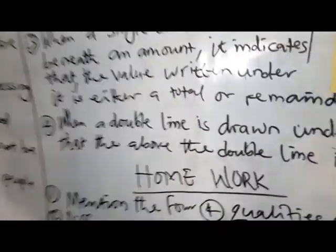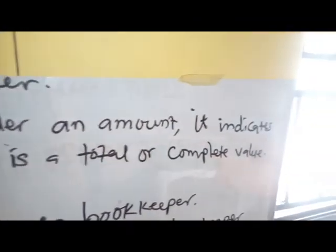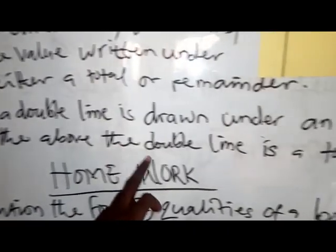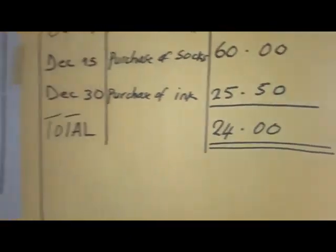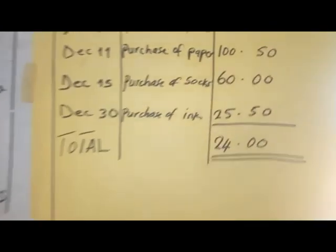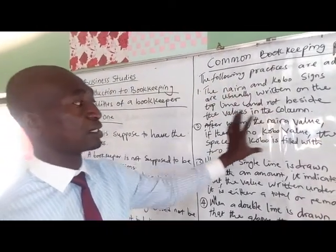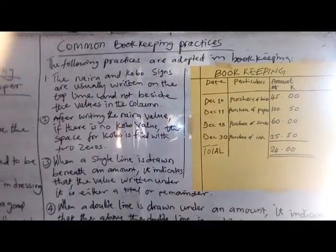Number four: when a double line is drawn under an amount, it indicates that the value above the double line is a total or complete value. As a bookkeeper, it is very important that you abide by these practices in order not to get confused at the end of the day.